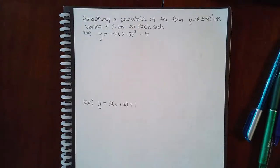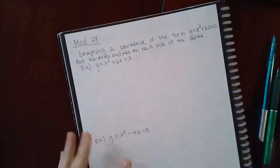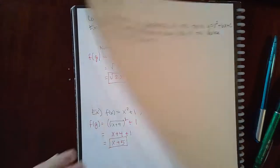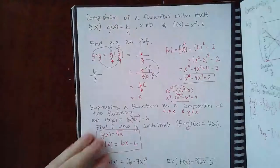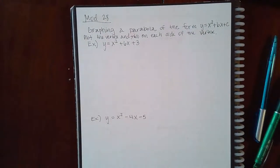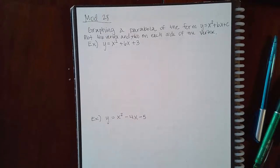This video covers module 28, starting with graphing a parabola of the form y = x² + bx + c. It says to plot the vertex and then two points on each side of the vertex. Ideally, you want to find the peak — that's the vertex — and then graph it.